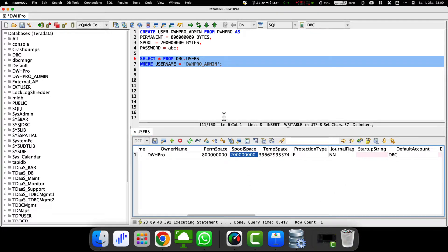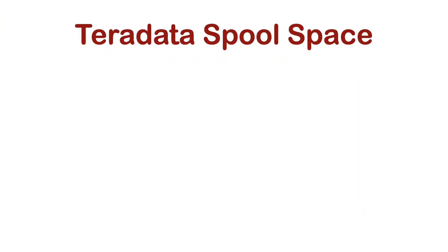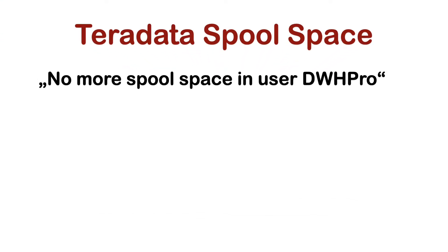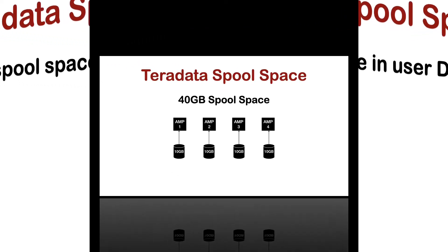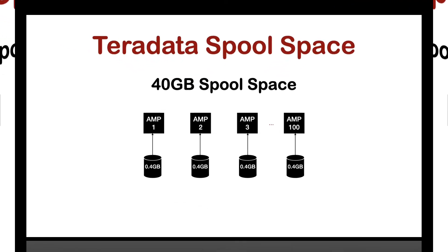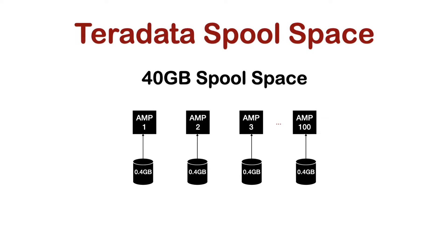Now let us discuss Spool Space issues that have causes other than the Teradata system running out of space. What if you get the error message 'no more Spool Space in user username,' but there should be enough space available? As Teradata divides the total Spool Space by the number of amps, each amp has only a fraction of the space available. If a query is skewed, it can happen that just one or a few amps do not have enough space available and Teradata aborts the request. As a general rule, the more amps a system has, the greater the risk, as you can see in the picture.